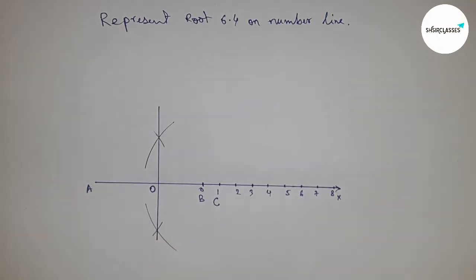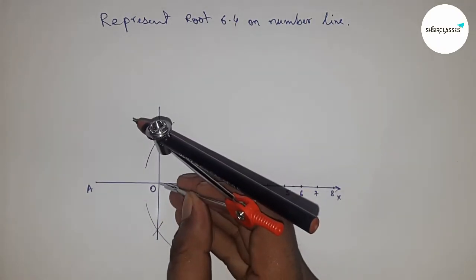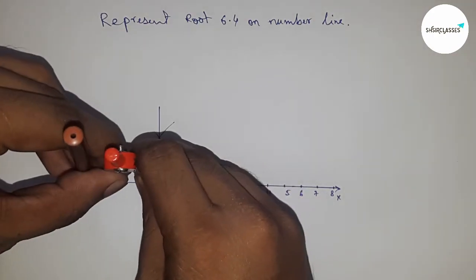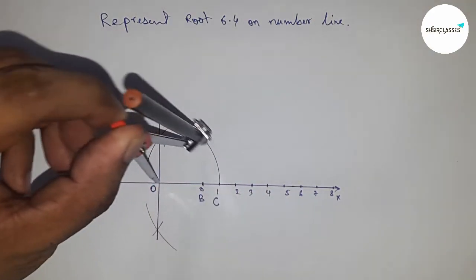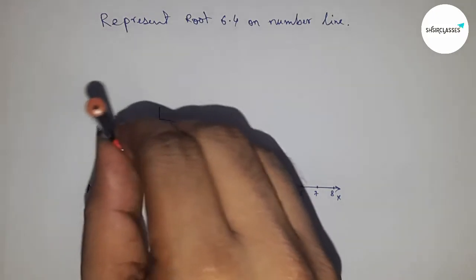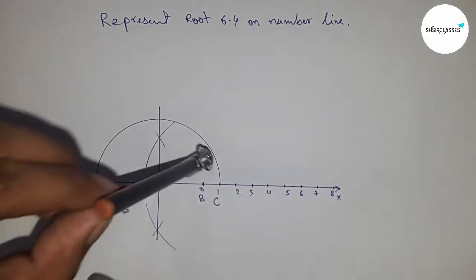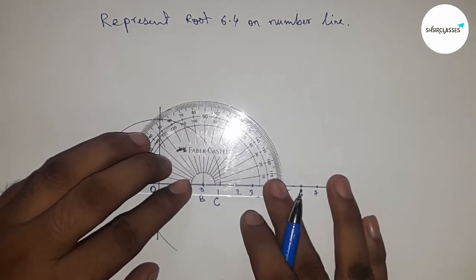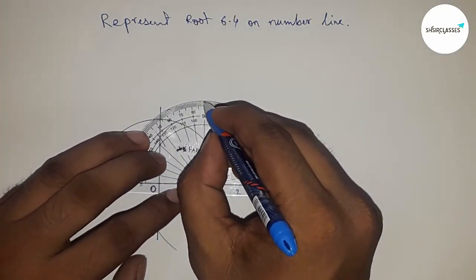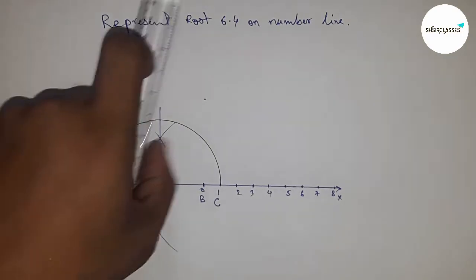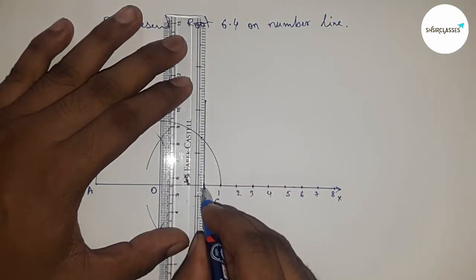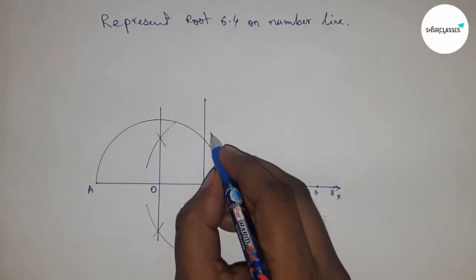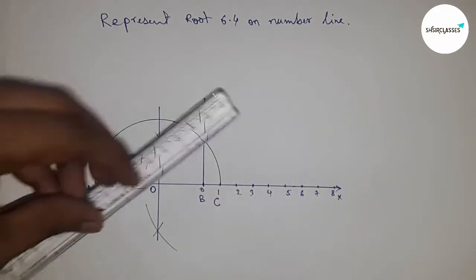This intersects at point O. Next, we have to draw a semicircle, so taking the radius OA and OC and drawing a semicircle through the points A and C. Next, constructing a 90-degree angle on point B by protractor, joining this, which intersects the semicircle at point D. Next, joining O and D.